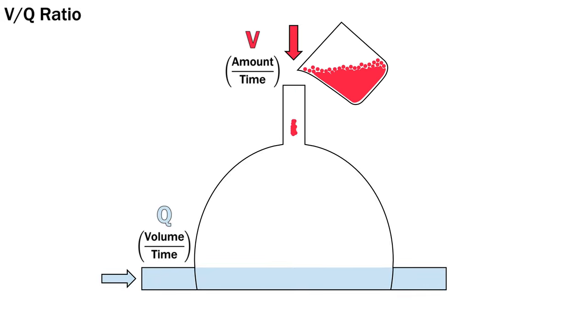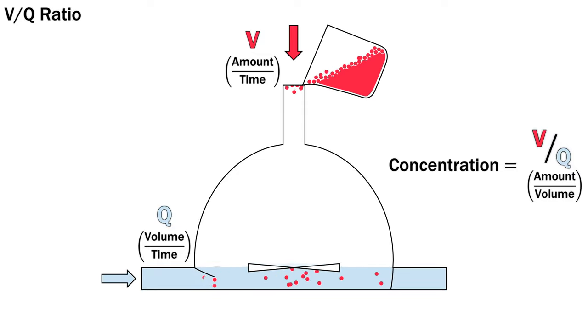Ventilation, V, is a dye of negligible volume that's added to the vessel in terms of quantity per unit time. By definition, the VQ ratio in this example is a concentration, or amount of dye per unit volume. Now imagine that we keep adding volume and amounts of dye at the same rates. The ratio will stay the same.